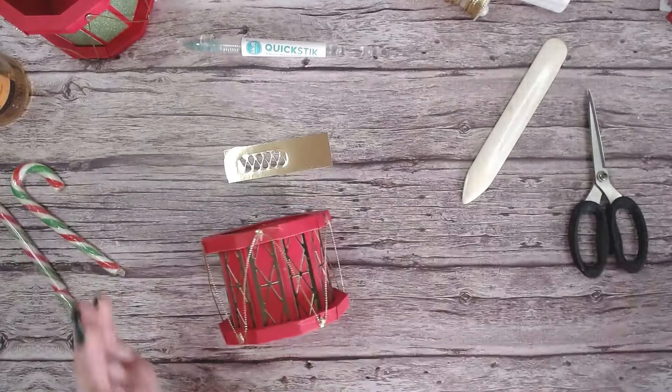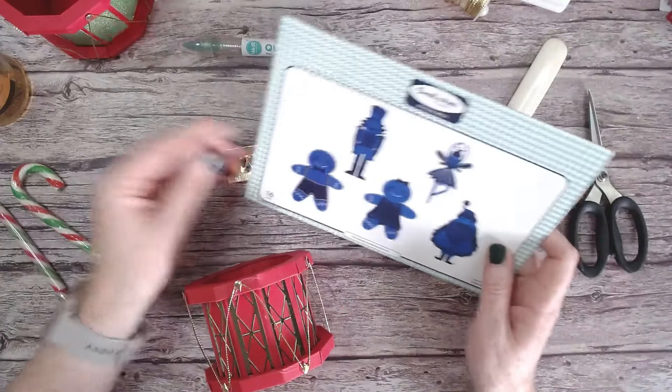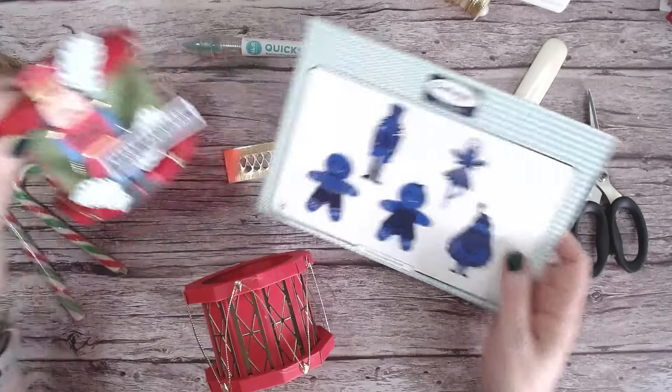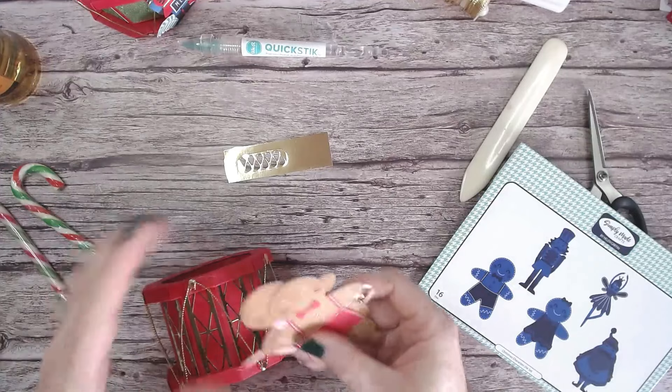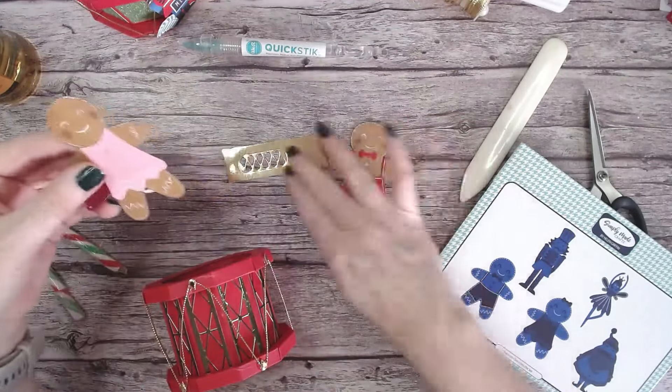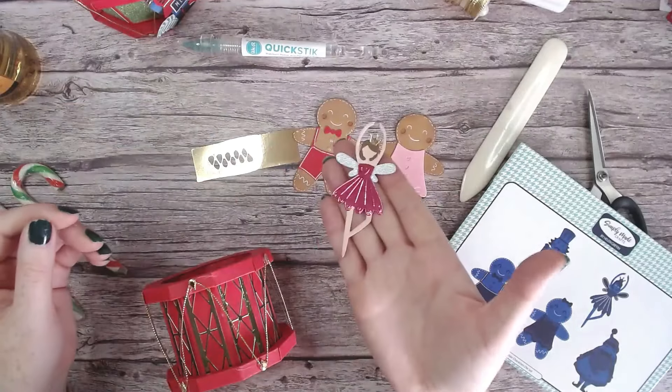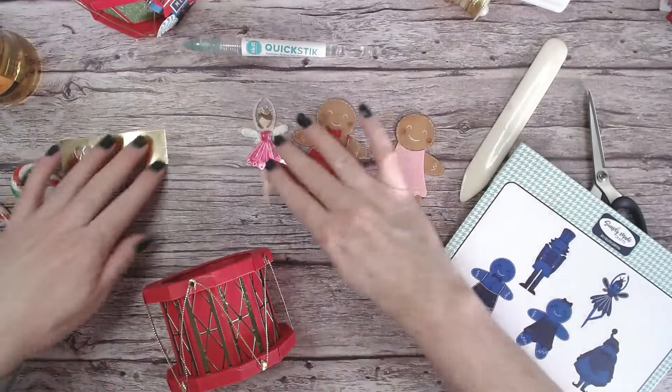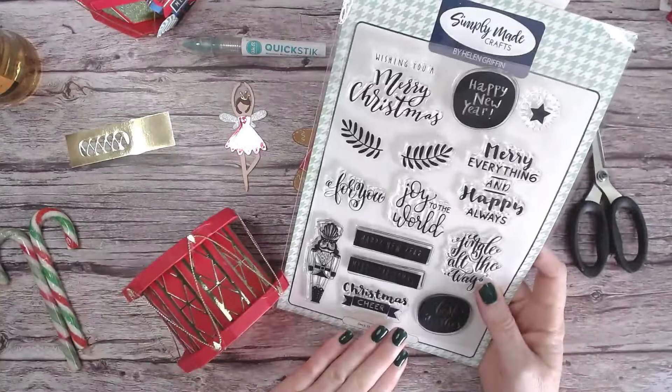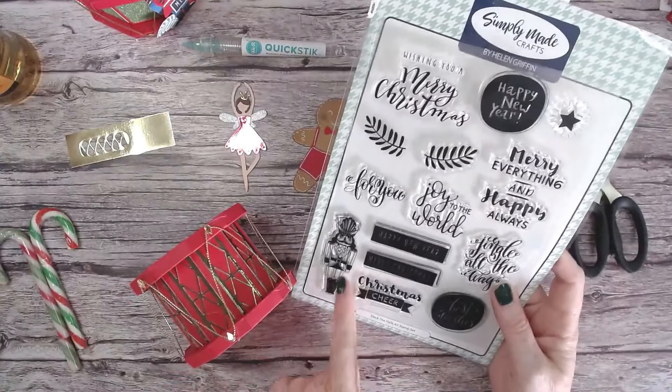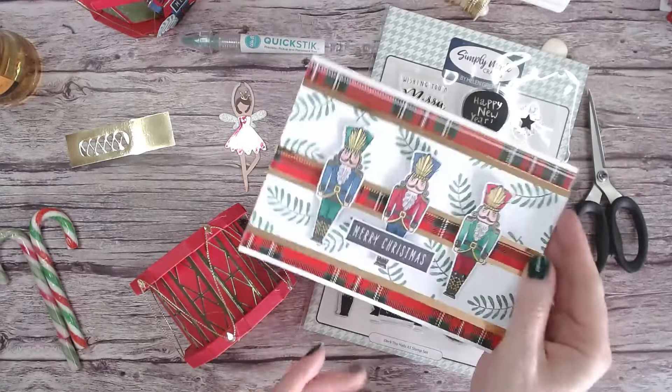So to finish this off, have a look at the Christmas Characters die set. I have the nutcracker here on this one. I have some gingerbread men - I might use the gingerbread men with this one, I haven't decided yet. So I've got the boy, I've got the girl, and I also have a ballerina, so you can go for the whole nutcracker theme there, or you could go ahead and use the stamp set as well. There's also a stamped image there of the nutcracker - that is a beautiful image too.